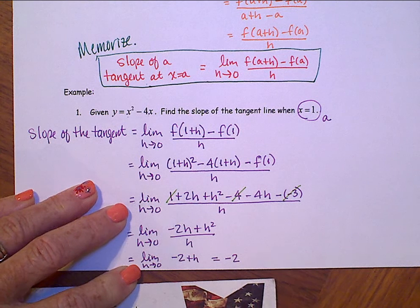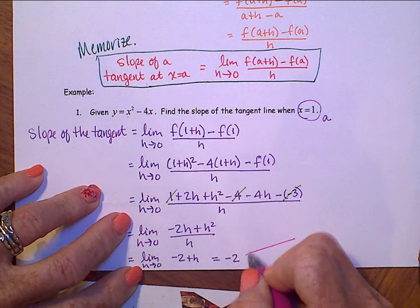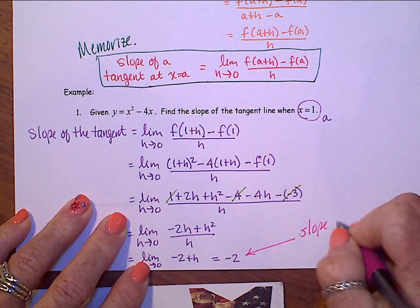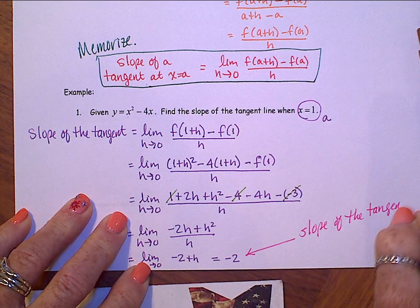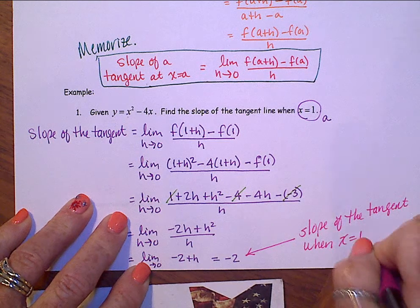What did that tell us? That told us right there that's the slope of the tangent line when x equals 1.